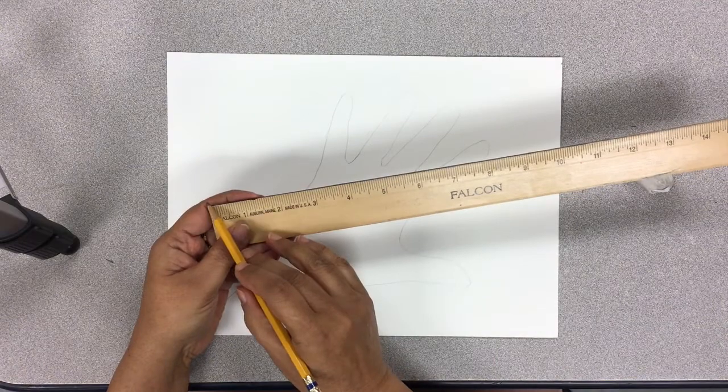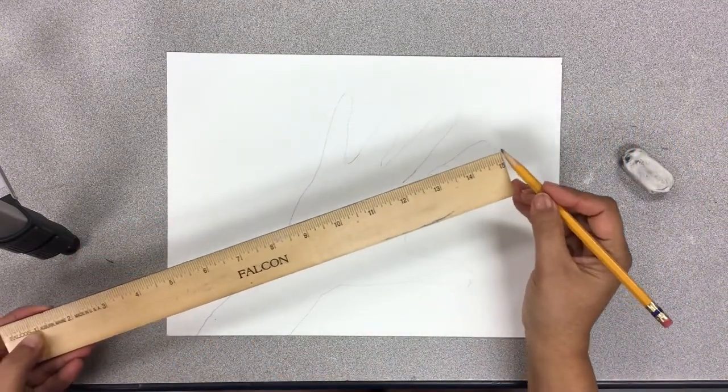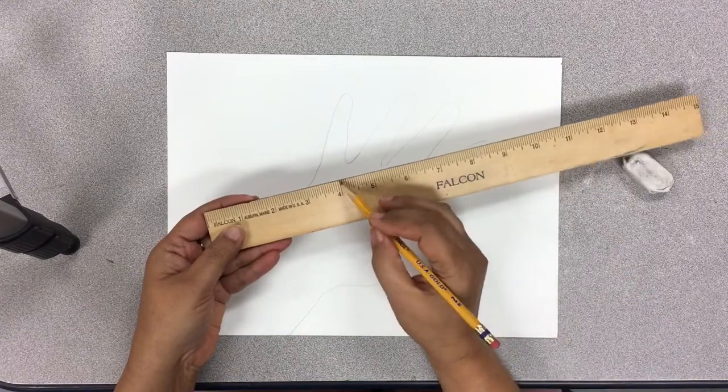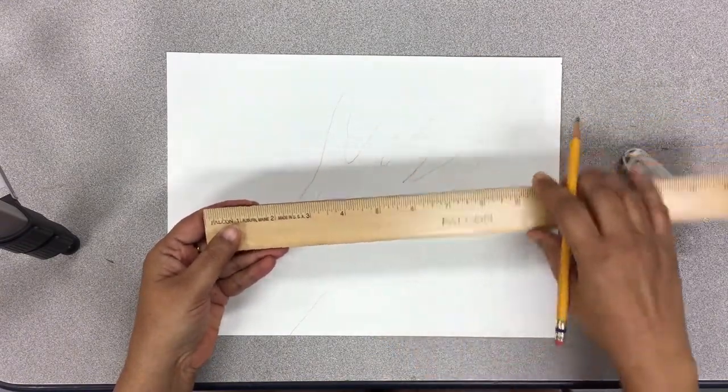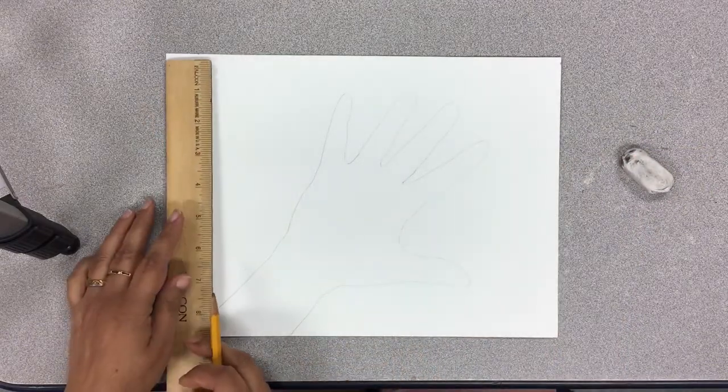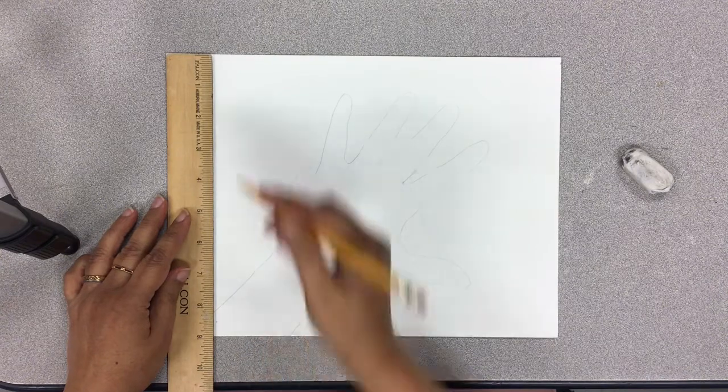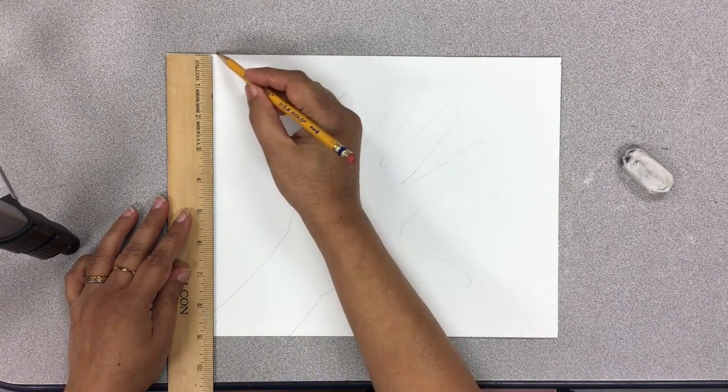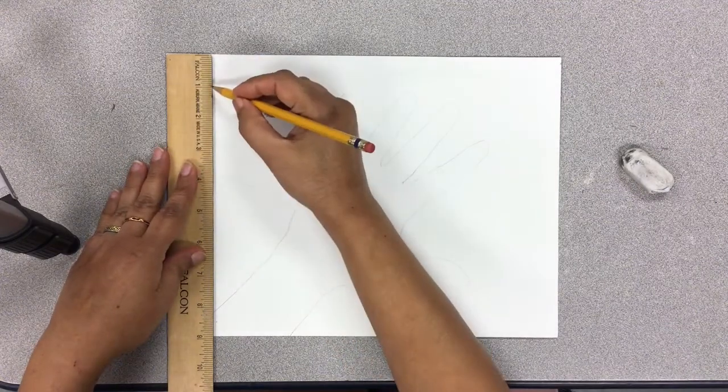For that, you will use the ruler and measure every one inch and then every half inch. The one inch lines are long lines with numbers next to it, and the half inch lines are the long line in between, halfway between the two numbers.